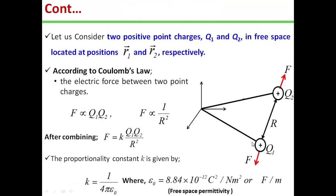Consider two positive charges Q1 and Q2 in free space, located at positions R1 and R2 respectively, with distance R between them. According to Coulomb's law, the electric force between the two point charges Q1 and Q2 varies directly as the product of the charges and inversely as the square of the distance between them. Mathematically, F is directly proportional to Q1·Q2 and inversely proportional to 1/R².